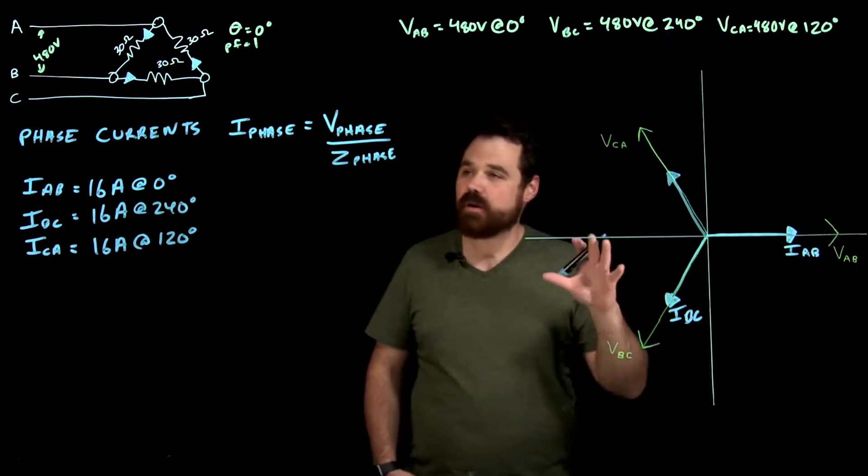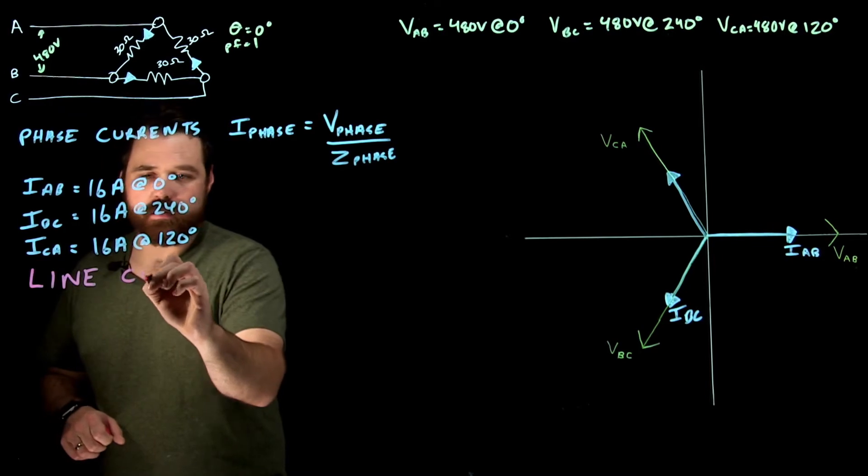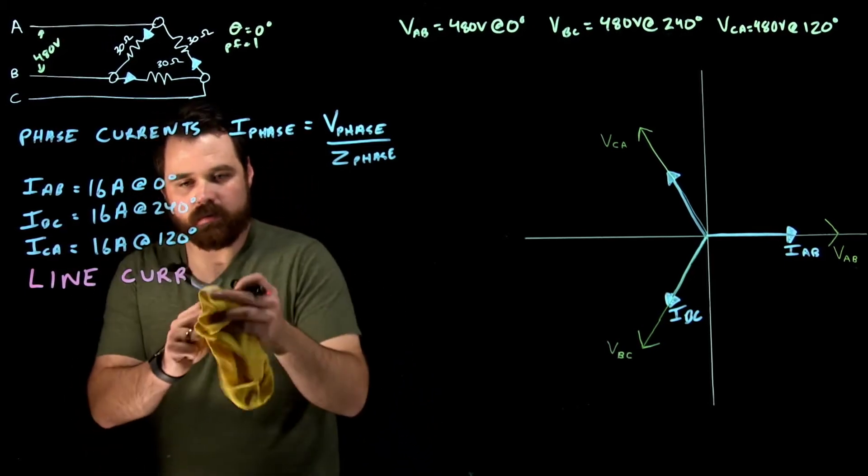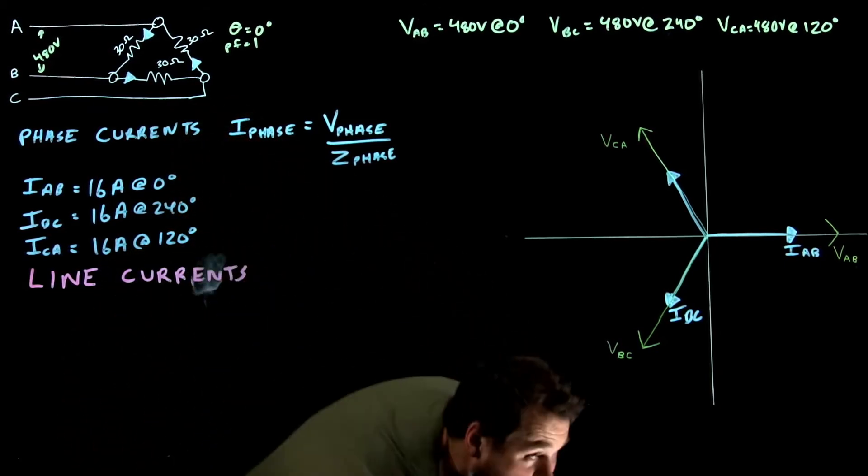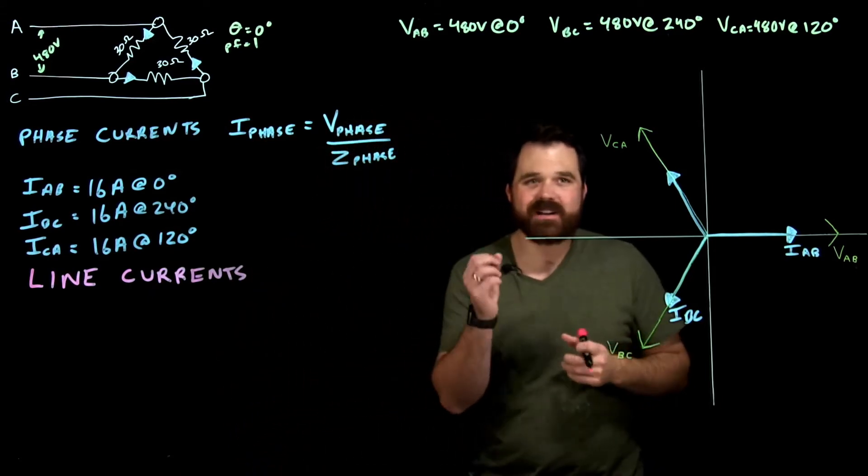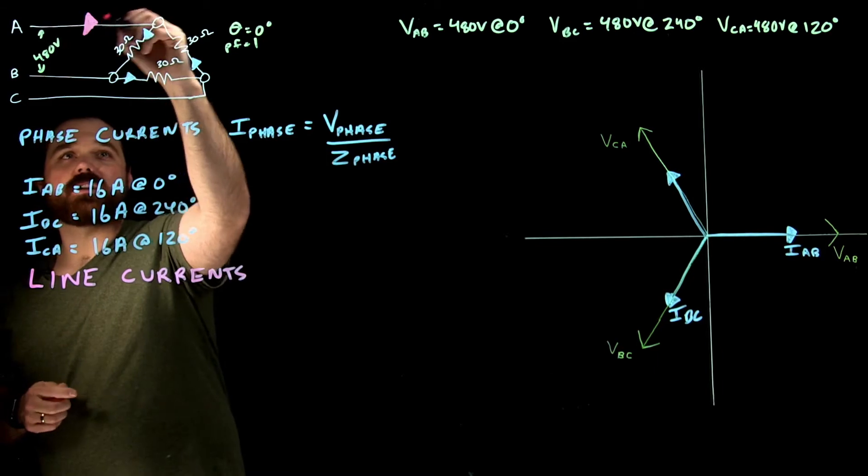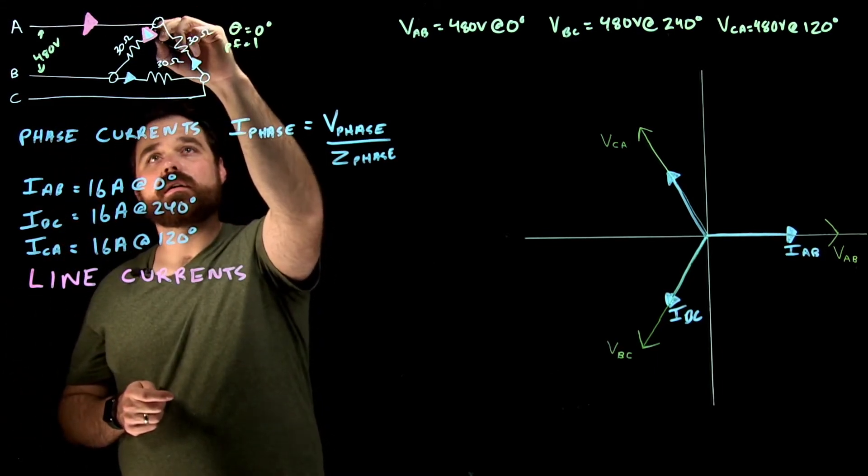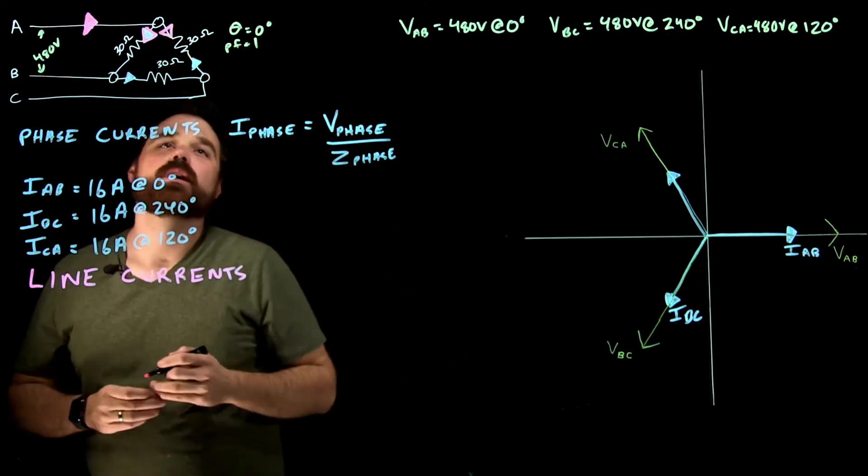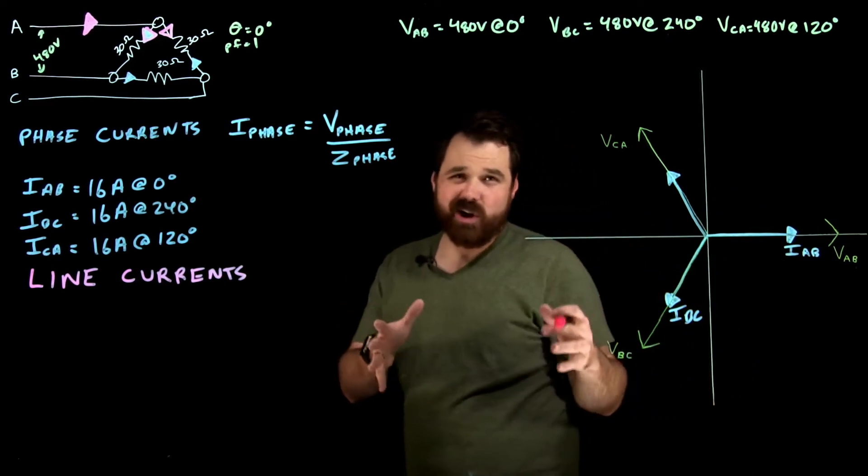Now what we need to do, and this is what this video is all coming towards, is now we want to solve our line currents. My line A current is going to be the current of this one right here, A to B, plus because we're going into that node and we know that all current going into a node must equal the current going out of that node, plus this current here which is A to C, which actually is the inverse of C to A. So it's this guy down here.